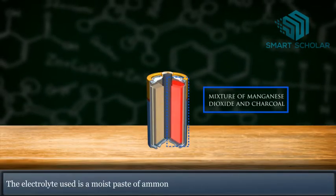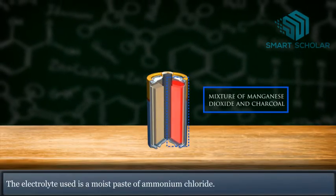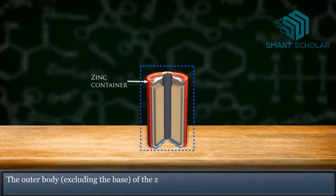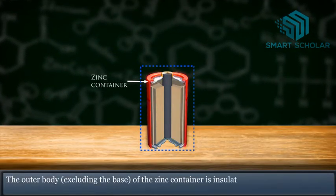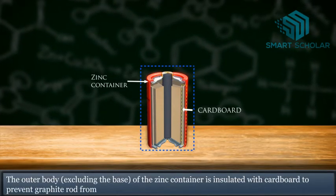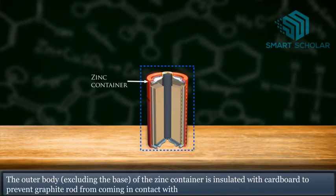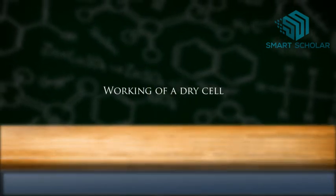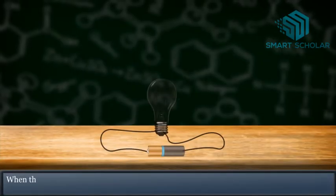The electrolyte used is a moist paste of ammonium chloride. The outer body excluding the base of the zinc container is insulated with cardboard to prevent the graphite rod from coming in contact with the zinc container.